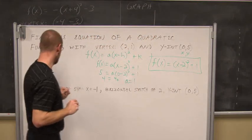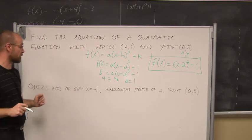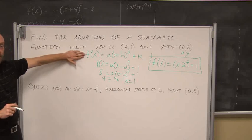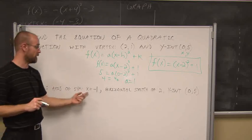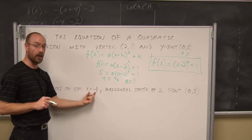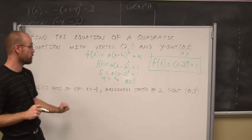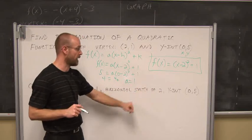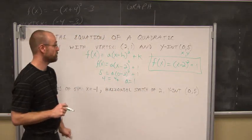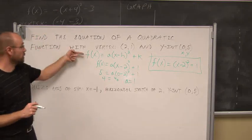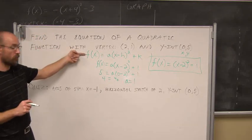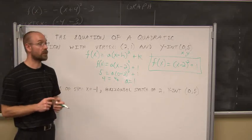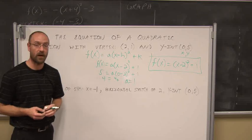Your quiz will be to do something similar with the given information: find the equation of a quadratic in standard form. If the axis of symmetry is x equals negative 1, it has a horizontal stretch of 2 — that's your a value — and a y-intercept of (0, 5). Find the equation in standard form that fits these parameters. This has been section 4.3, quadratic functions. Thank you for watching.